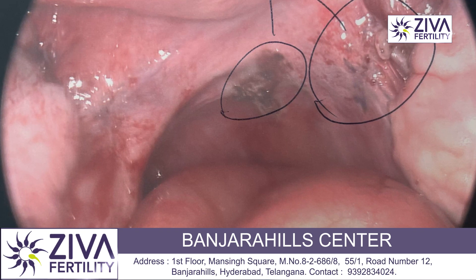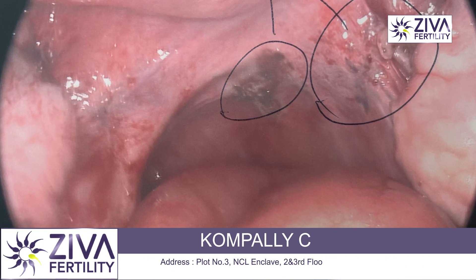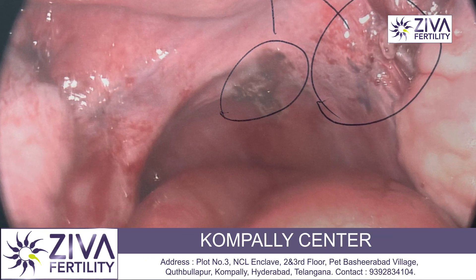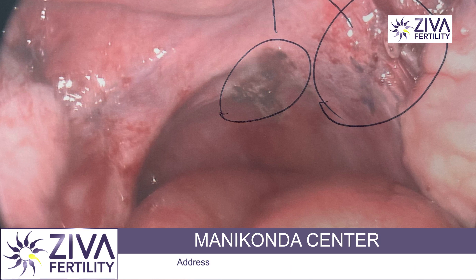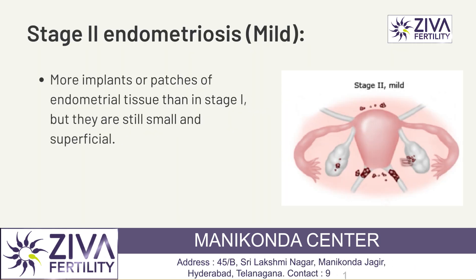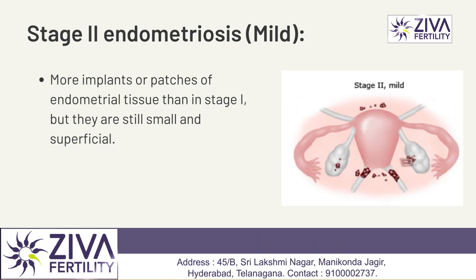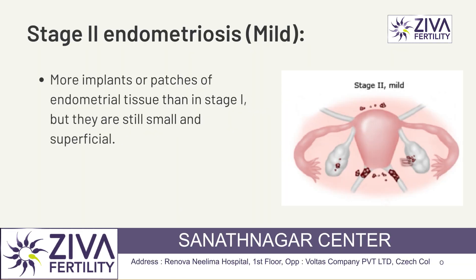Next is stage 2, which is also called the mild stage. In this stage, there are more implants or patches of endometrial tissue than in stage 1, but they are still small and superficial.